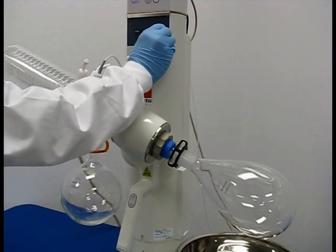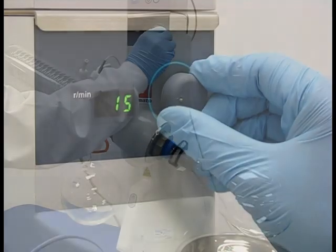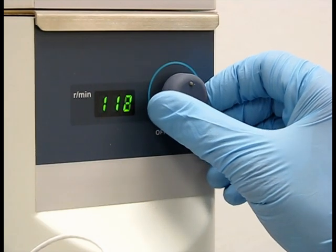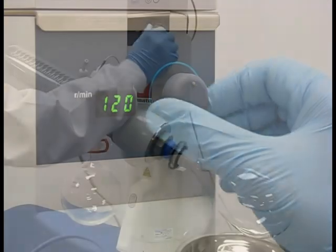After loading your sample, begin rotating the sample evaporating flask by adjusting the knob on the main unit clockwise until the desired RPM level is reached.